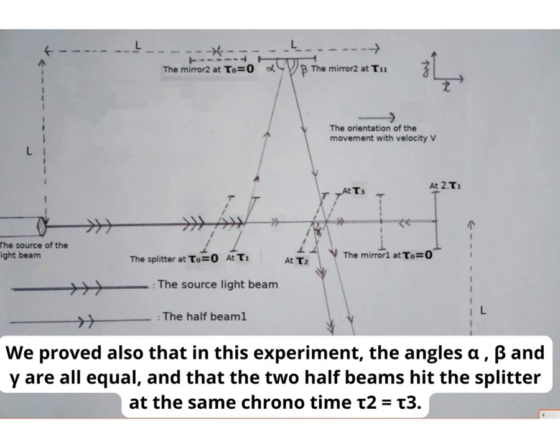We proved also that in this experiment, the angles alpha, beta and gamma are all equal, and that the two half beams hit the splitter at the same chrono time, tau 2 equals tau 3.